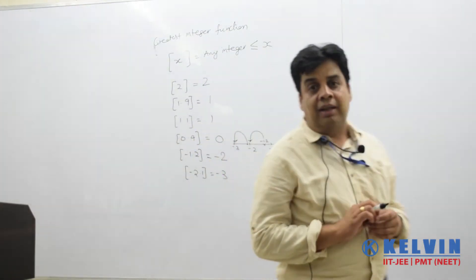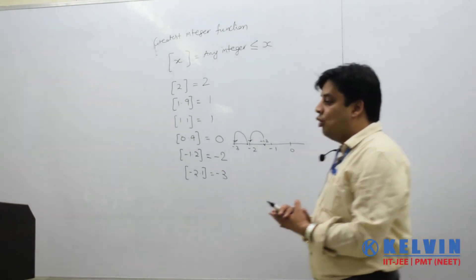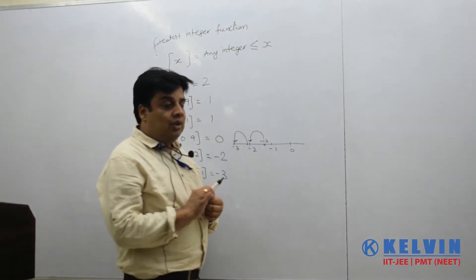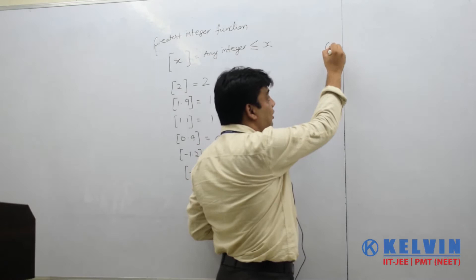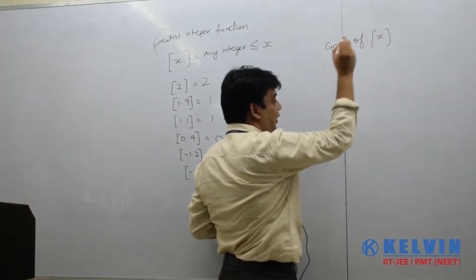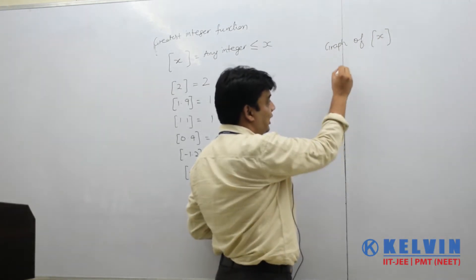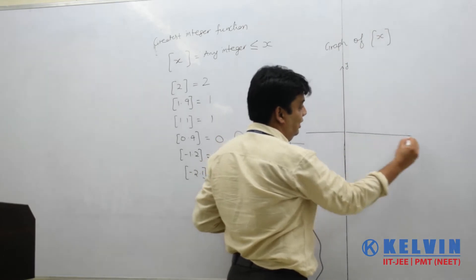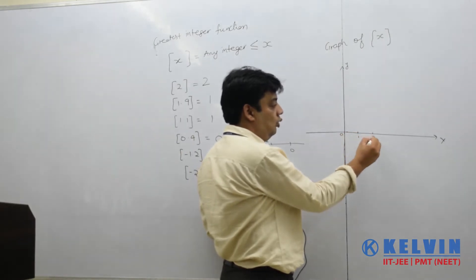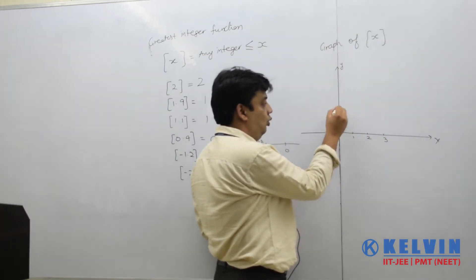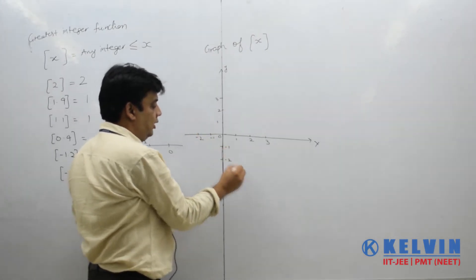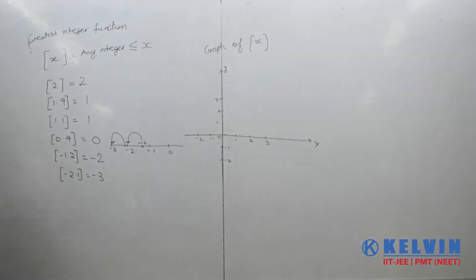So Greatest Integer is the integer less than or equal to that number. Now let us come to the graph of this function. Taking y-axis and x-axis, let us plot the graph of Greatest Integer of x. We mark points 0, 1, 2, 3 on the positive side and minus 1, minus 2 on the negative side of both axes.